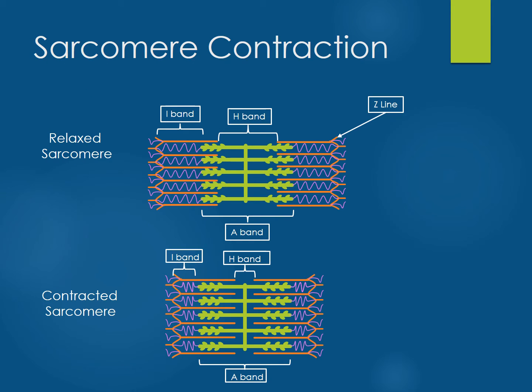The sarcomere has several areas known as specific band types. The I-band is the area that includes thin filaments only. The H-band is the area that includes thick filaments only. The A-band contains the entire area that thick filaments span, including the area in which thin filaments overlap with thick filaments.